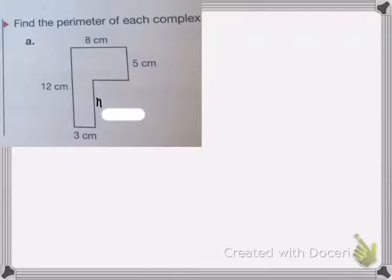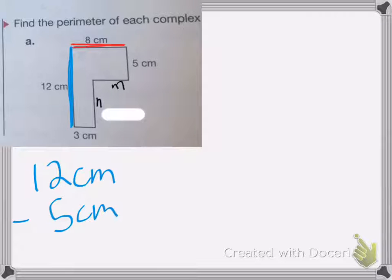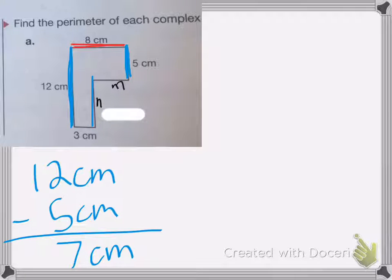But again, I need to find the length of these two sides. So my total width is 12 centimeters, and my total length is 8 centimeters. So to figure out what my width is, I'm going to do 12 centimeters minus 5 centimeters. That's my other width here. And that'll give me N. So 12 minus 5 is 7 centimeters. So N is equal to 7 centimeters.